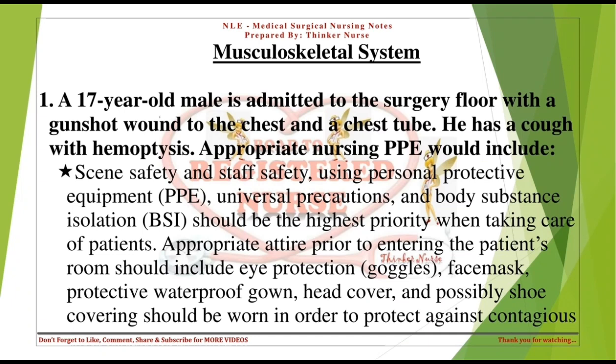A 17-year-old male is admitted to the surgery floor with a gunshot wound to the chest and a chest tube. He has a cough with hemoptysis. Appropriate nursing PPE would include scene safety and staff safety, using personal protective equipment or PPE, universal precautions, and body substance isolation or BSI, which should be the highest priority when taking care of patients.